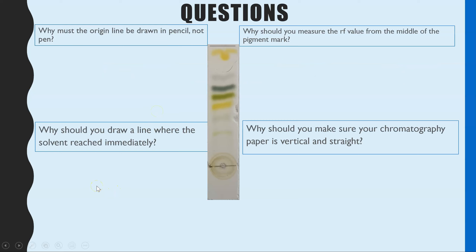Here are some exam questions that have come up in the past linked to this required practical. Number one: why must the origin line be drawn in pencil, not pen? Number two: why should you measure the Rf value from the middle of the pigment mark? Number three: why should you draw a line where the solvent reached immediately after taking your paper out? Number four: why should you make sure your chromatography paper is vertical and straight when positioned in the solvent? Pause the video if you want to have a go at answering those questions.